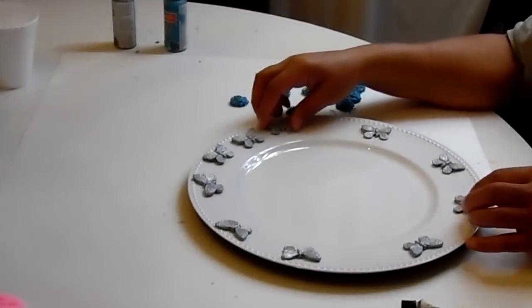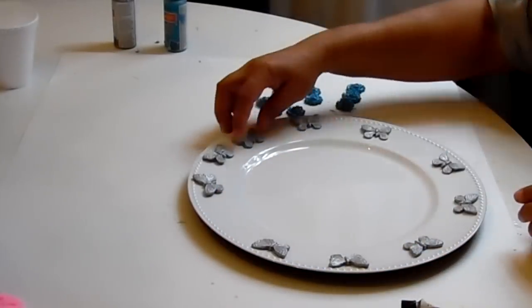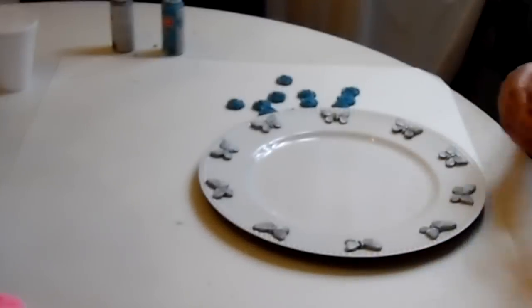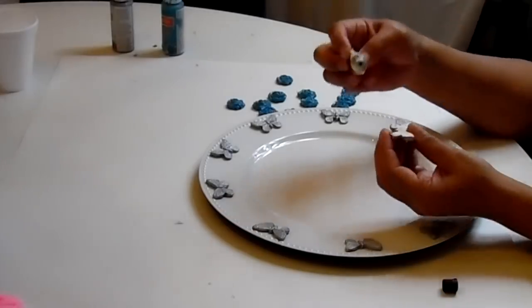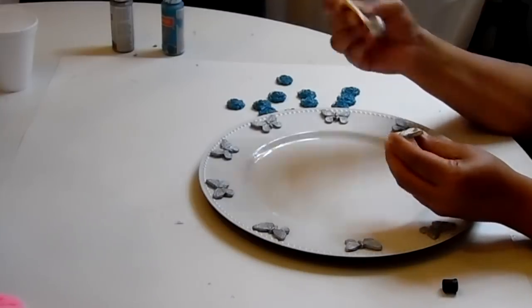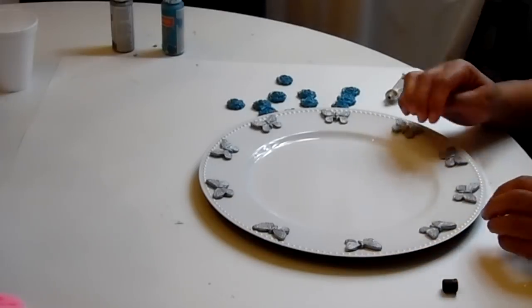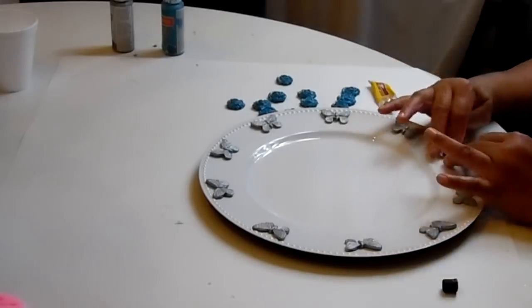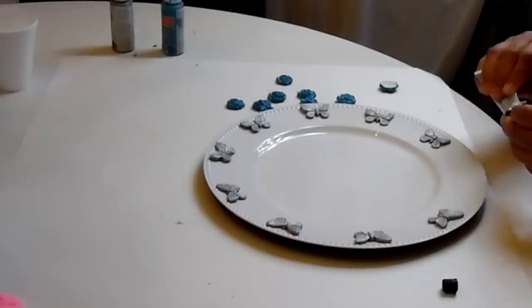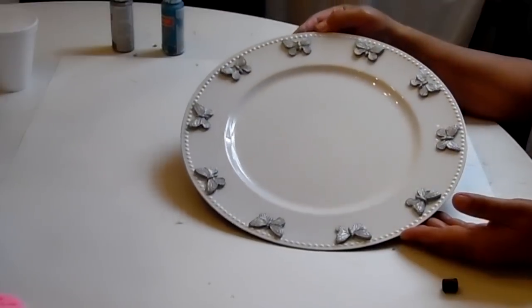Okay. So first off. I'm going to evenly arrange my butterflies around the charger. Now you guys can measure if you like. But I'm just going to eyeball it. Okay. So I'm just going to go ahead and start gluing these down now. And I'm just going to put the fix-all on all 4 wings. And then in the middle. Okay. This is the look after we've glued down the butterflies. Isn't that gorgeous?